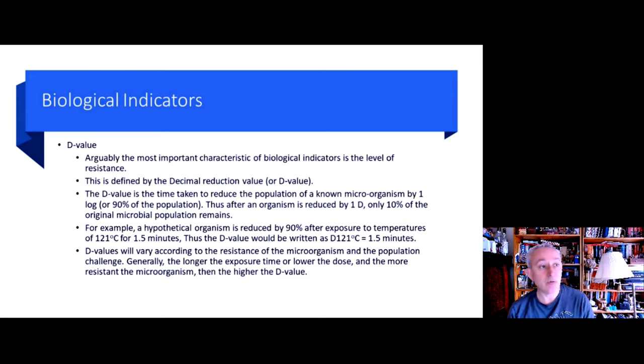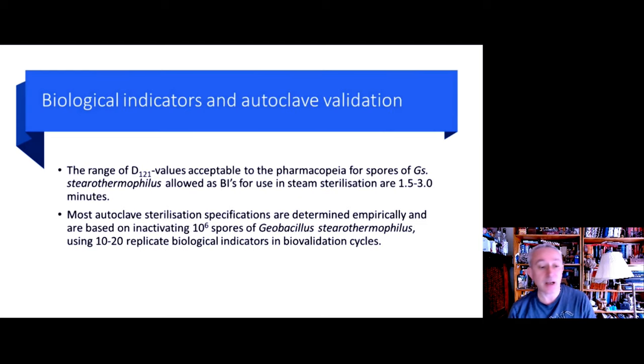Now, thinking about an autoclave for autoclave validation, biological indicators are key for assessing the efficacy of the autoclave. The range of D121 is recommended by the pharmacopoeia, so the standard temperature for evaluating an autoclave is 121 degrees Celsius. The European pharmacopoeia guides us to use biological indicators made from spores of Geobacillus stearothermophilus with a D value of 1.5 to 3 minutes. Most autoclave sterilization processes are then determined empirically by the time taken to inactivate 1 million spores of Geobacillus stearothermophilus. Typically, there'd be 10 to 20 biological indicators placed in an autoclave cycle.